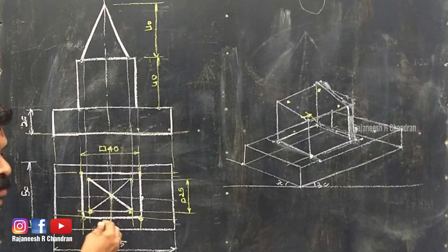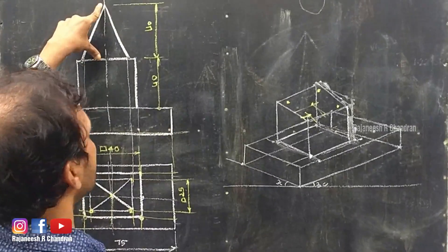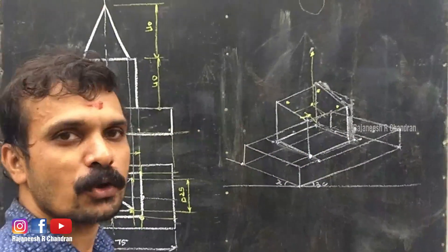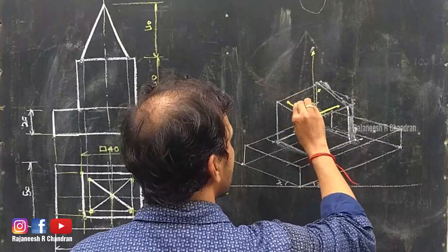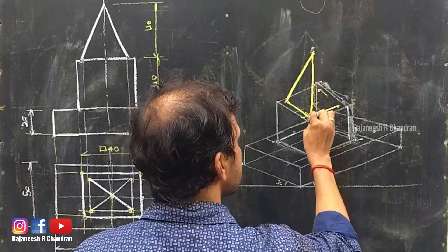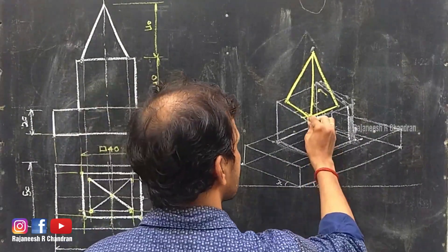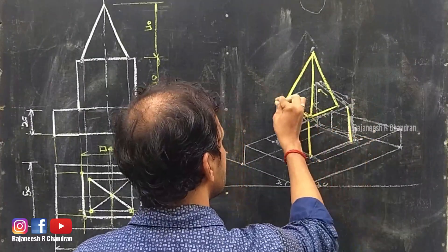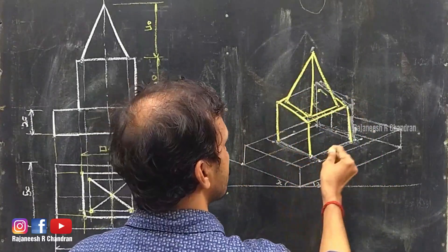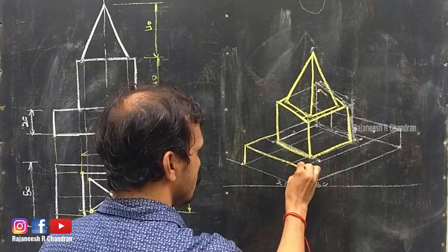Similarly, we can obtain the center position also. Now the apex is at a height of 40 from the center, so through that center point at a height of 40 you can locate the apex. Once you locate all four base points and the apex, connect them: connect this, connect this, connect this, connect this, connect this, connect this. Connect this also — connect all edges to complete the square pyramid.